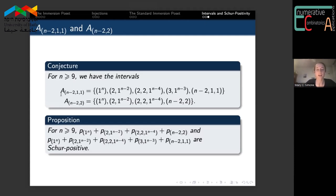If these conjectured intervals hold, we have shown that these sums of power sums are Schur positive. To do so, we use the combinatorial Murnaghan-Nakayama rule. We're even able to show something stronger, which is that all of these partial sums leading up to our last term are also Schur positive along the way.